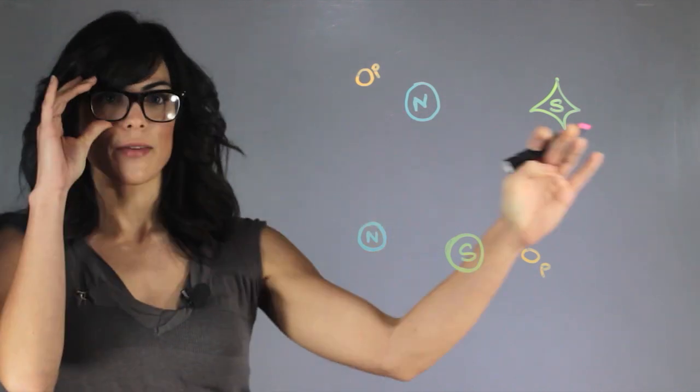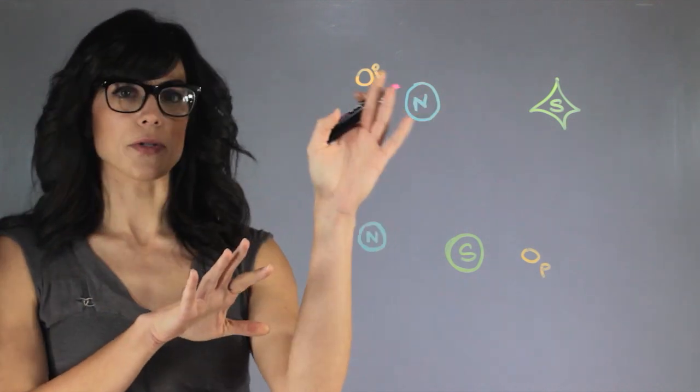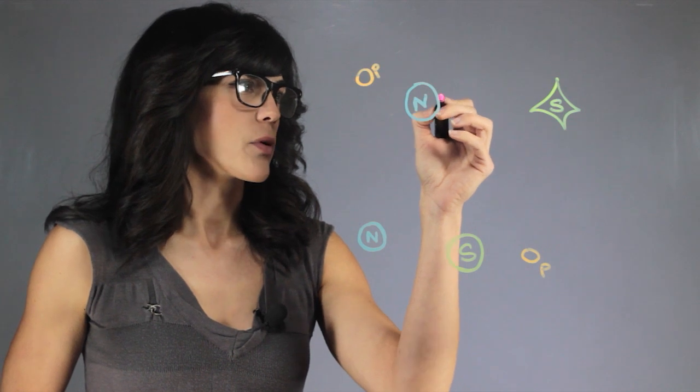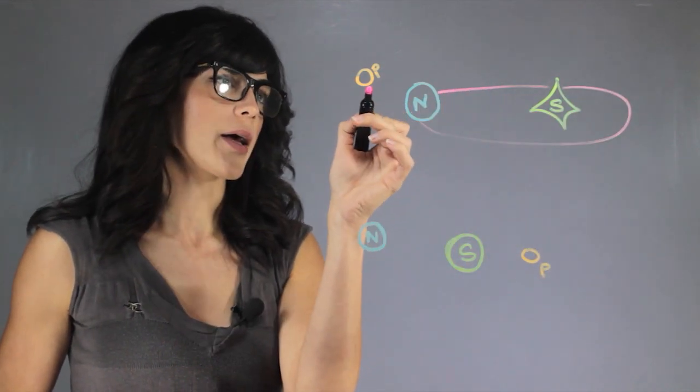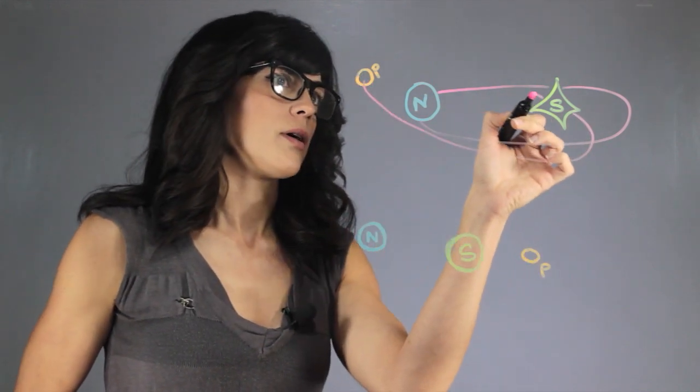So here we have a side view of the solar system. I'm only including Neptune and Pluto because those are the two planets. Here we have the orbit of Neptune around the Sun, and here we have the orbit of Pluto around the Sun.